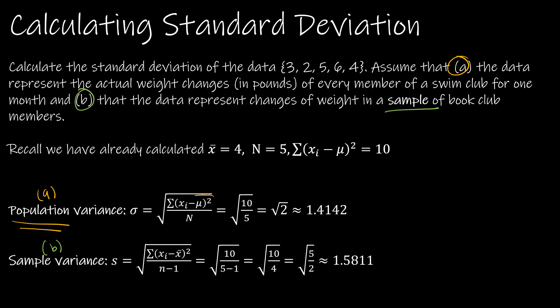For part A, the sum of squared deviations was 10. Dividing by n=5 gives a variance of 2, and the square root of 2 is 1.4142. For part B, it's the same sum of 10 but we divide by n−1=4, giving 10/4 = 2.5. The square root of that is 1.5811.